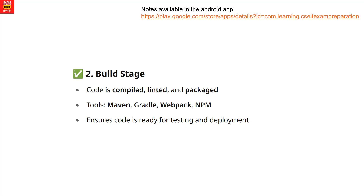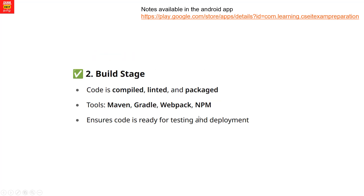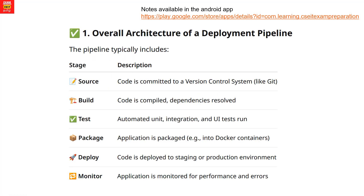The third stage is the testing stage. The code will build and testing starts. There are multiple types of automated testing defined. Tools used include Selenium, JUnit, and others. Automated testing will be performed across multiple test types. These two stages — build and test — form the first part of the CI/CD pipeline.